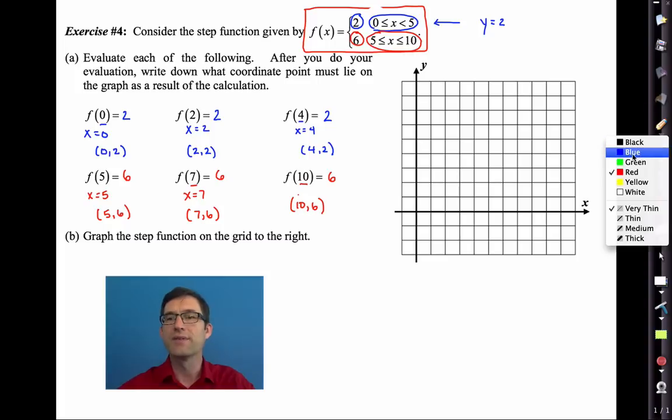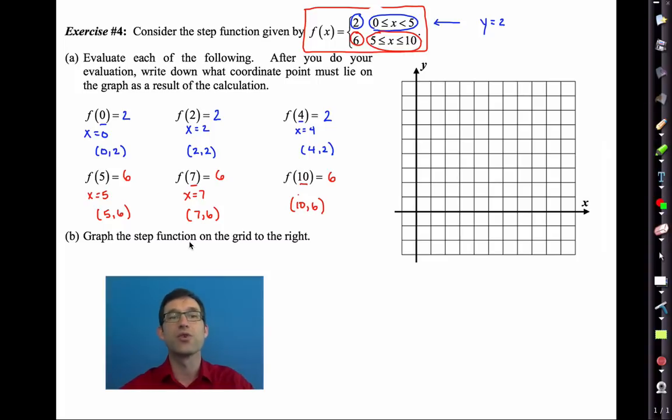Let me plot these points on the grid. Letter b asks us to graph the function. So for instance 0, 2 is right there. 2, 2 is right there. 4, 2 is right there. Let me go in red here. 5, 6 is right there. 7, 6 is right there. 10, 6 is right there.